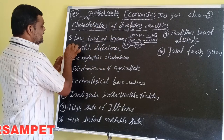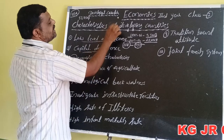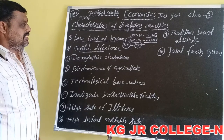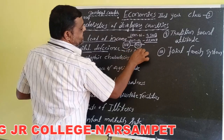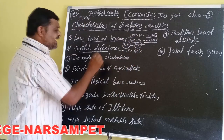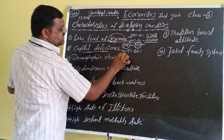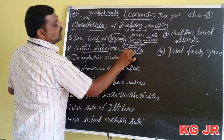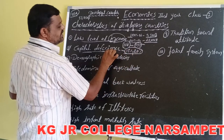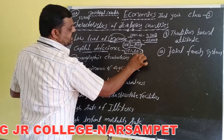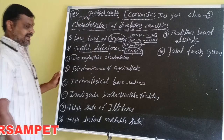The second characteristic is capital deficiency. Capital deficiency is also one of the important characteristics of developing countries. The saving capacity is only 15% to 20% in developing countries. The main reason is that per capita income is at a low level; therefore saving capacity is also low, and therefore investment is also very low.